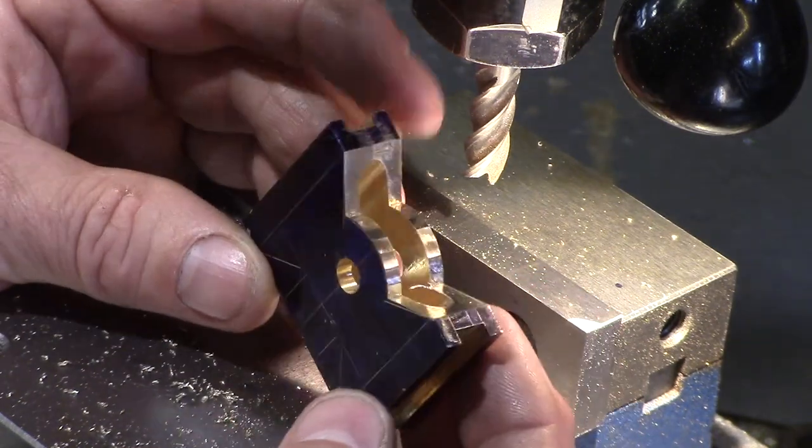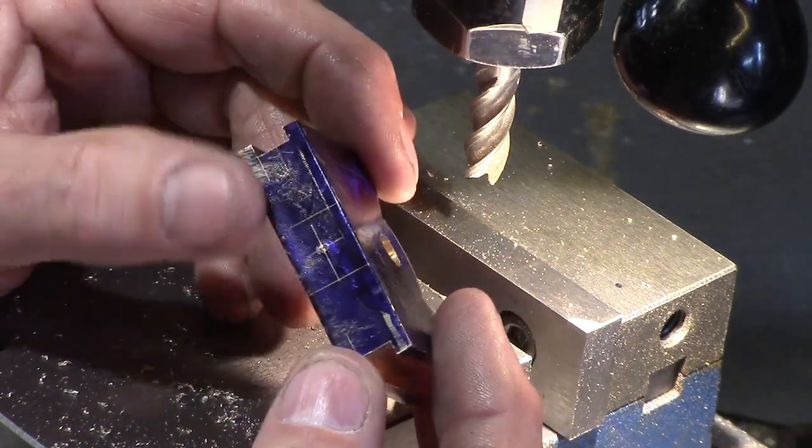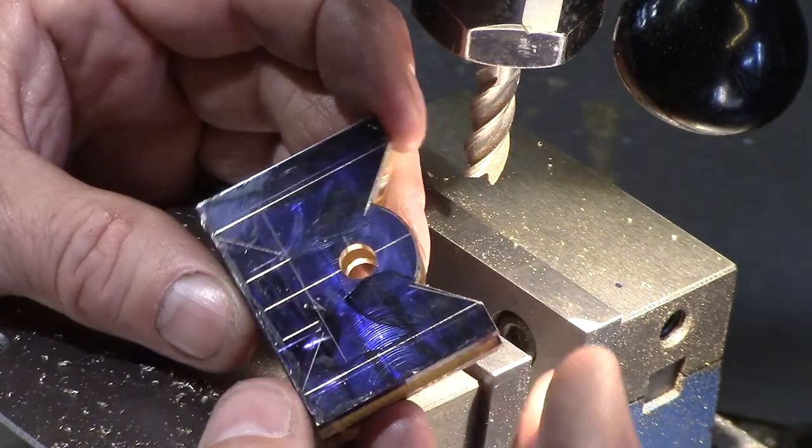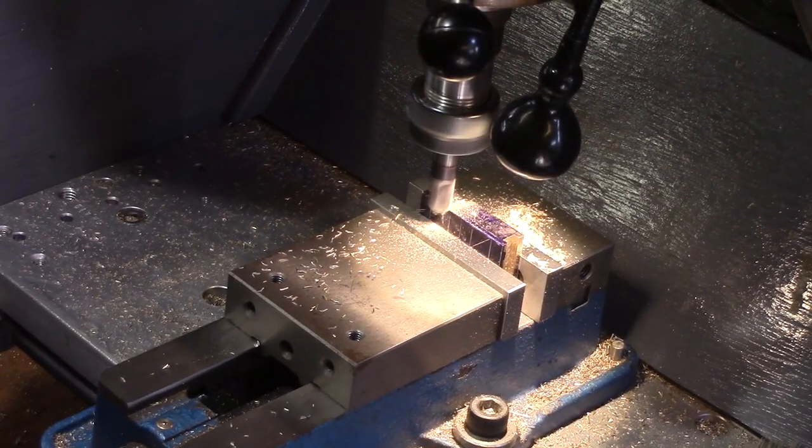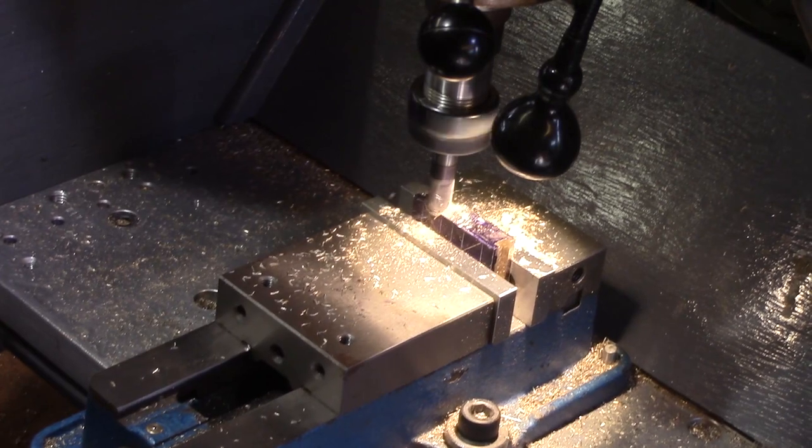The end where the piston rod will attach needs to also have a radius on the internal corners, so this was done by using a ball-nosed end mill to remove the brass down to size.